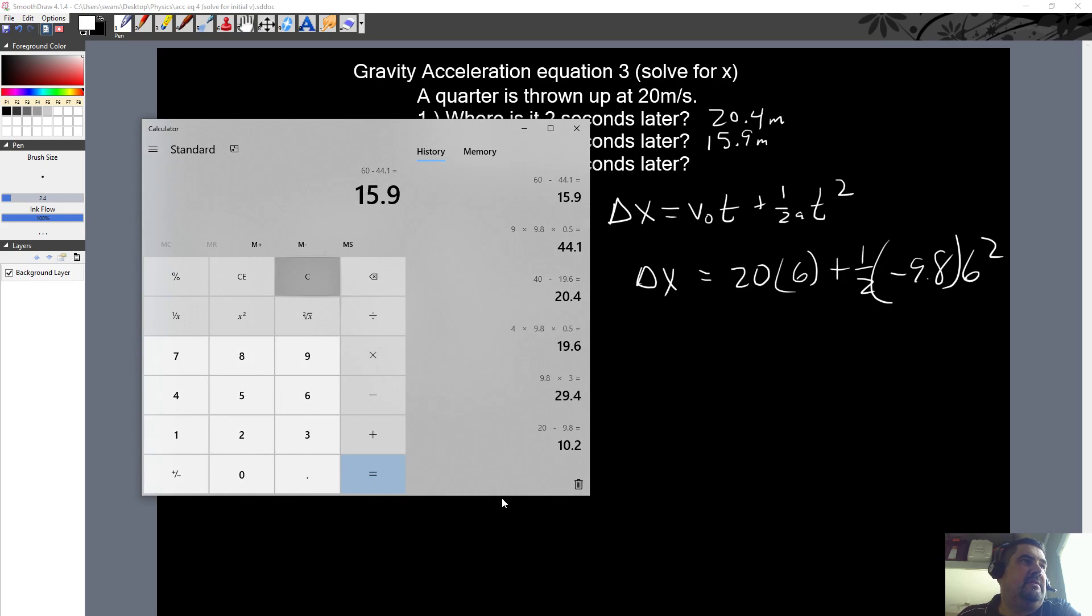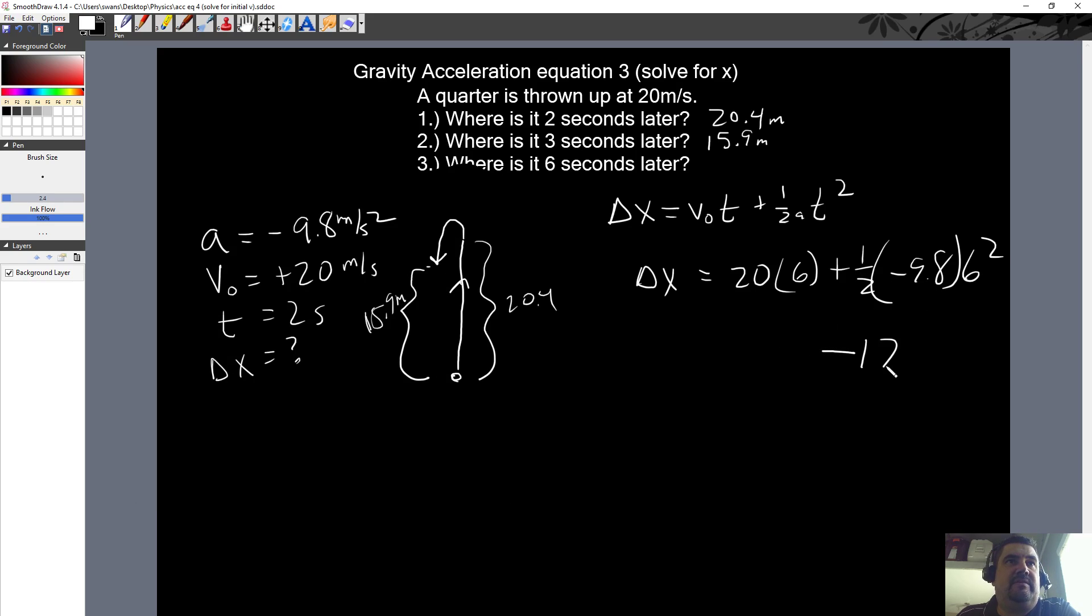So let's do the 36 times 9.8 times 0.5, that's the half part. So I just worked it this way. Remember this is negative, negative 176.4. And then this right here is 20 times 6 which is 120, is equal to delta X. And so the answer is going to be negative. 120 minus this, that's going to be negative 56.4 meters.